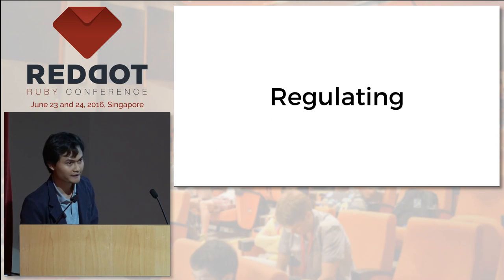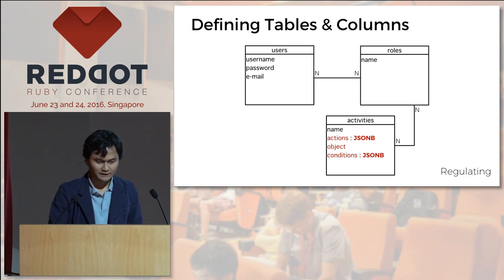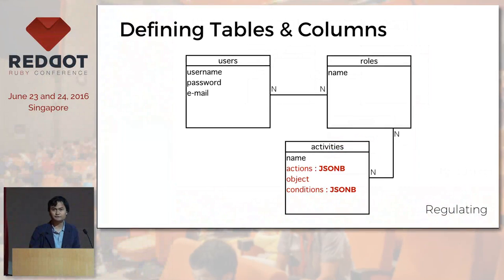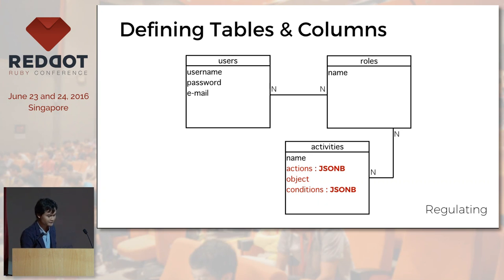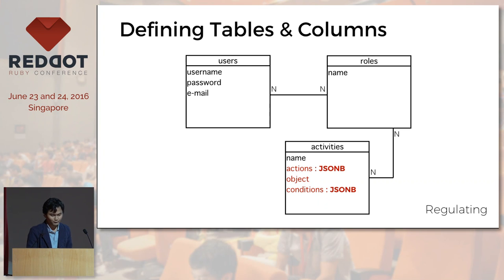I will focus first on the regulating part. This is what I use for my system right now. It's not really different from standard designs, but if you notice, there are more columns on the activities part — you may call it privilege or permission. I added three more fields: actions, objects, and condition. Currently we use JSONB for action and condition.